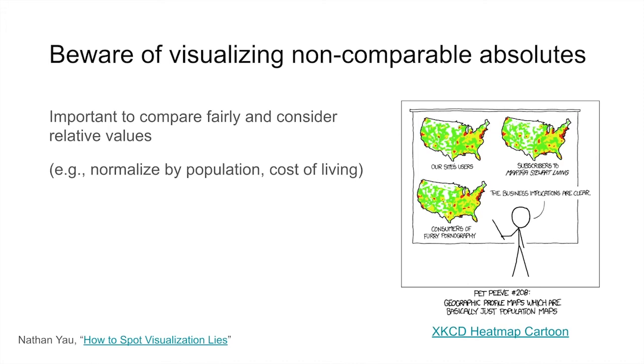Instead, as the comic notes, each map is essentially just showing how populous different areas of the country are. By normalizing these datasets by population, you can look for true spatial patterns, locations where the occurrence of some particular phenomenon is greater or less than you would expect for the size of its population.